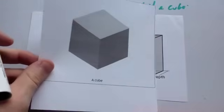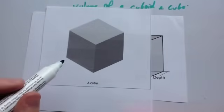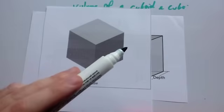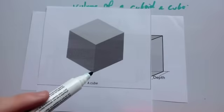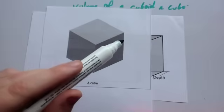Also, we're going to look at how to find the volume of a cube. A cube is a special type of cuboid where each of the lengths are the same size. So if that was 5cm, that would be 5cm, and that would be 5cm.